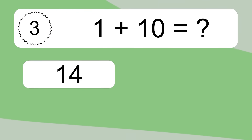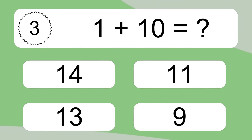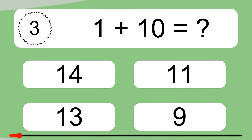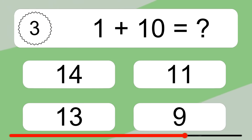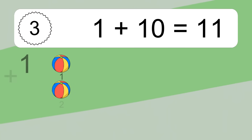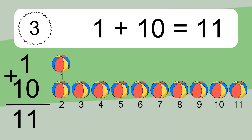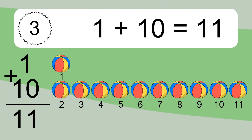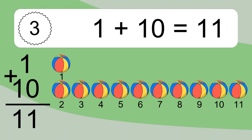1 plus 10 equals what? 1 plus 10 equals 11. Let's count it: 1, 2, 3, 4, 5, 6, 7, 8, 9, 10, 11.